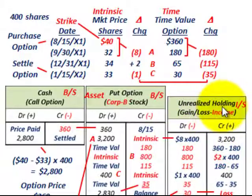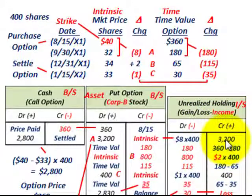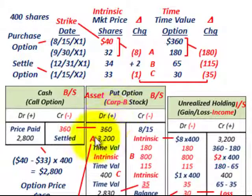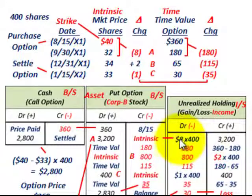So the unrealized holding gain — we would credit that for $3,200, and the put option account would be increased by $3,200. That's simply the drop in price of $8 per share times the number of shares we have an option on.